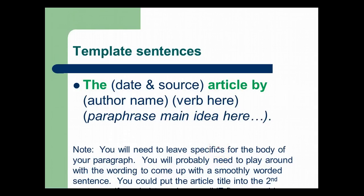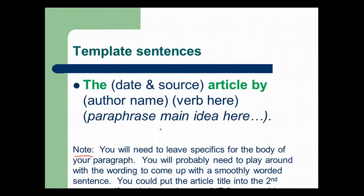So here's a template — one template, and there is another way to do this. 'The [date and source] article by [author's name]' — then you put the verb and paraphrase the main idea. You always want to paraphrase things and come up with your own wording. Remember that you will have to play around with the wording. It does take some getting used to this format and remembering to put all this information in. You don't want to just list it and think that's a sentence — you have to make sure it flows smoothly.